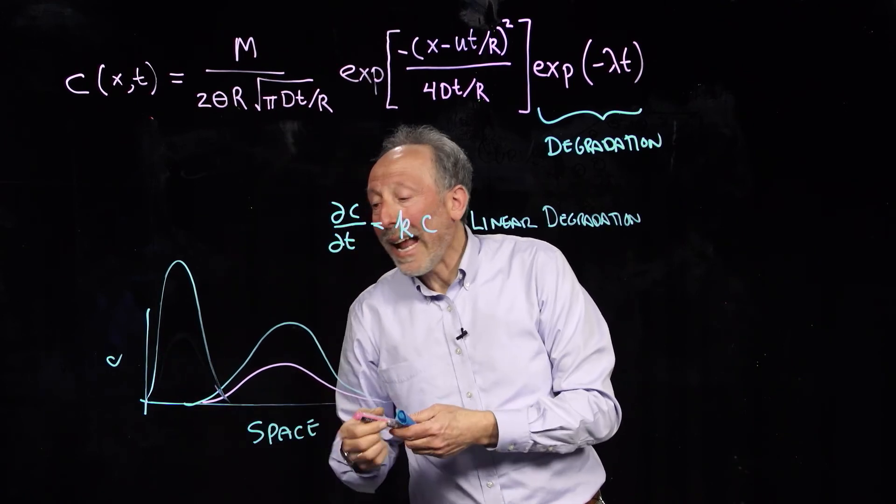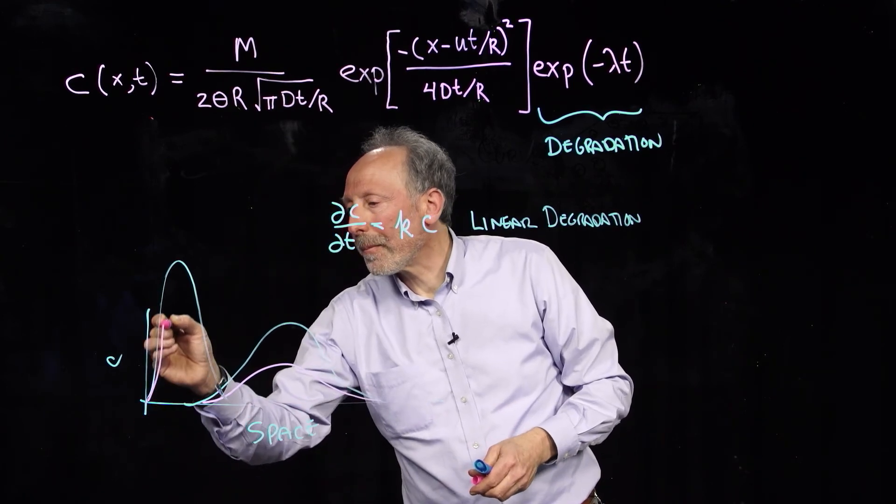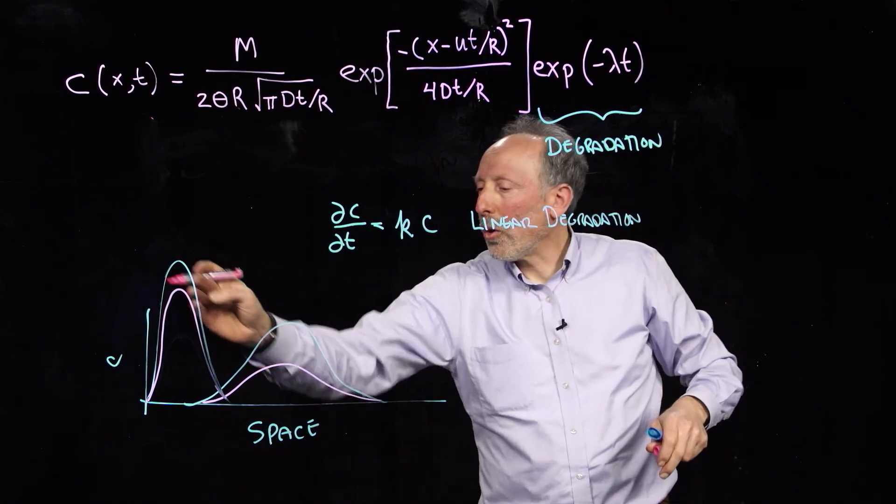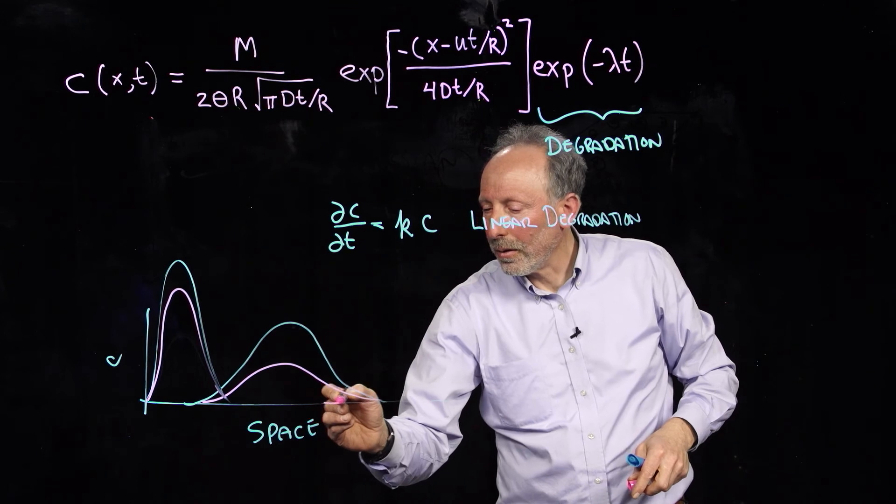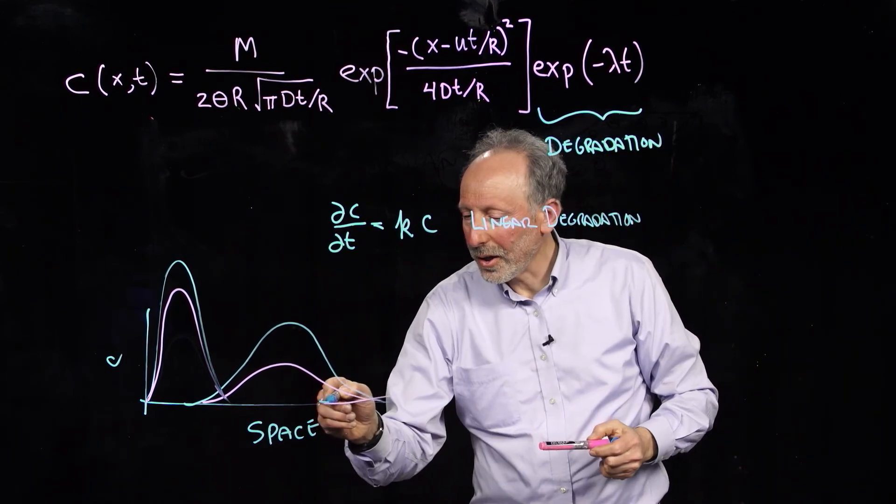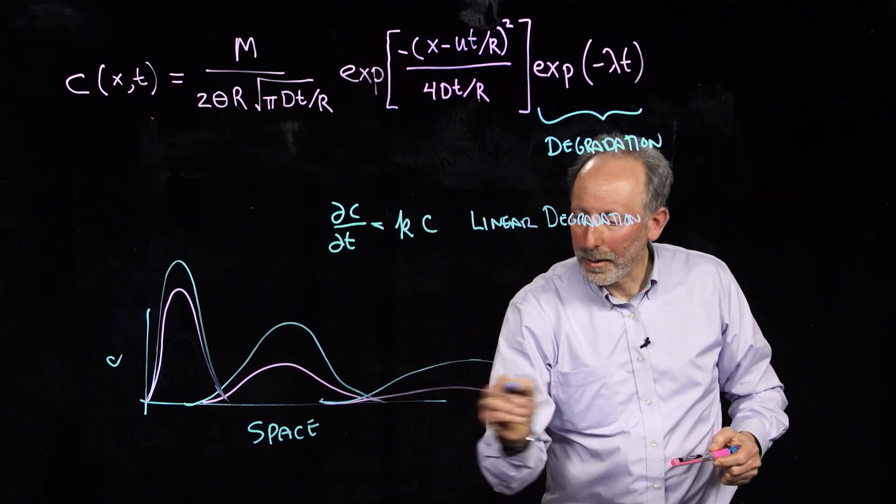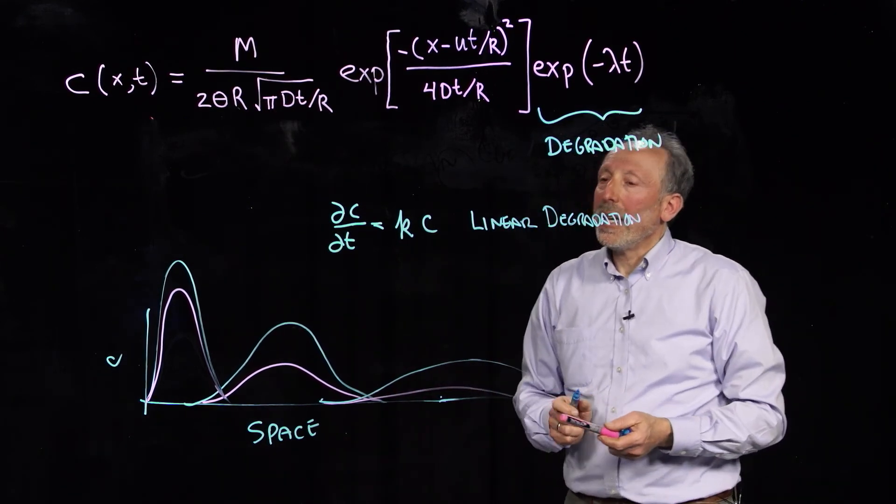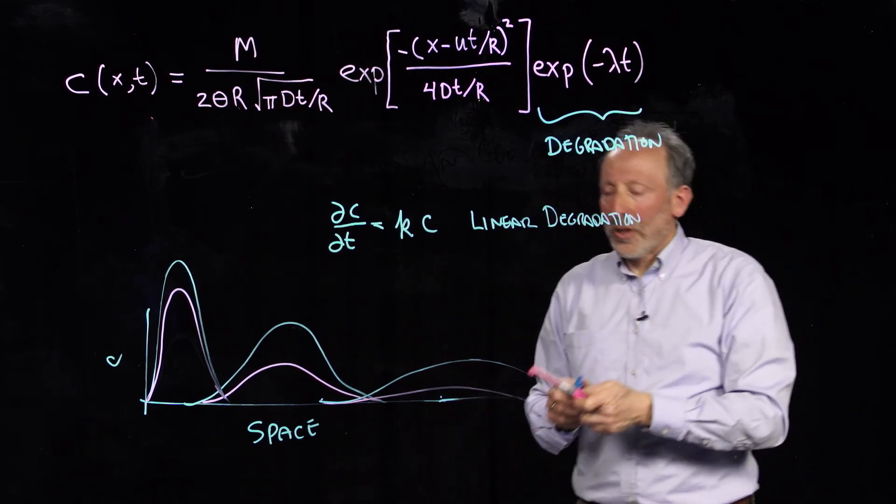Why? Because it hasn't been exposed to degradation as long. So, this degradation multiplier is getting more and more influential as time goes on. So, our undegraded plume might be higher, but our degraded plume might be very, very low. So, that's the simplest way to describe degradation.